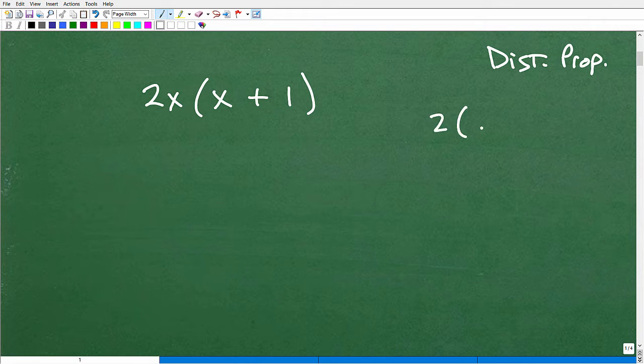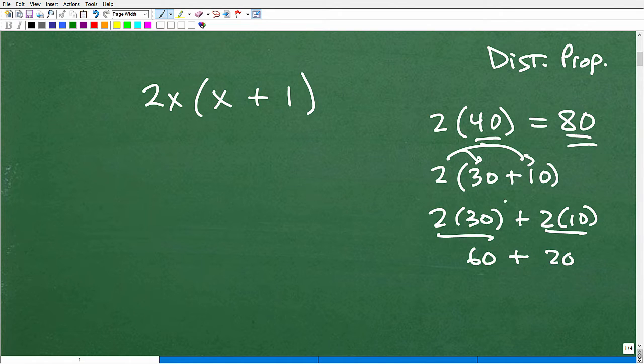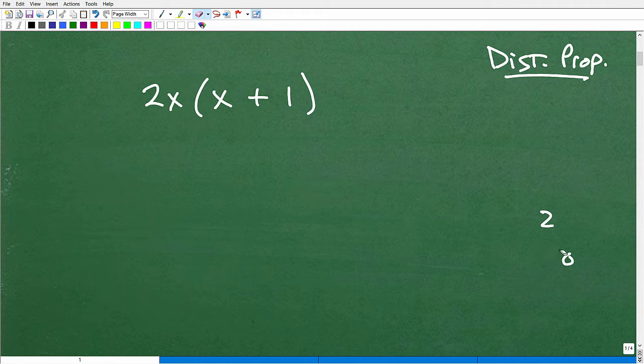The distributive property is so awesome. Let's just quickly look at an example. If I was going to go 2 times 40, of course, we know the answer is 80. But if I could break this up into a sum or difference, let's say 2 times 30 plus 10, that's 40 as well. So 2 times 40, I could write it like this if I wanted to. So I could distribute that 2. So 2 times 30 plus 2 times 10. And when I add this up, I get 60 plus 20, which, of course, is 80. That's an illustration of the distributive property with numbers.